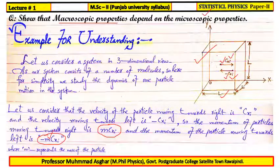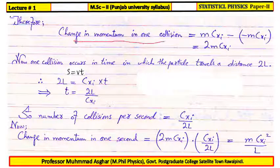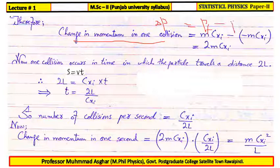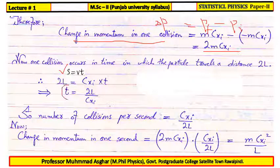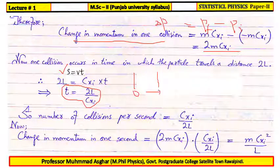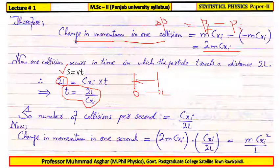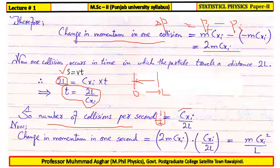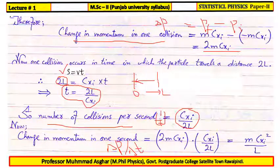Therefore, the change in momentum in one collision, delta P, equals final minus initial momentum, which gives 2mC_xi. According to the definition of velocity, s = vt, so we can find the time of travel of a particle from one side of the cube to the other, covering length L. The time between two successive collisions is 2L/C_xi. Therefore, the number of collisions per second is C_xi/(2L). The change in momentum per unit time (delta P / delta t) gives the value mC_xi² / L.